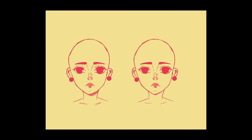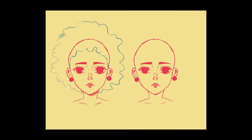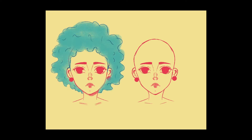I usually start by doing the hairline and sideburns. For this afro hairstyle, I'm just going to draw a bunch of squiggles, very randomly and very loosely, to get the basic structure of how an afro should look. This one is the easiest out of all of them. I darken the outline a little bit and give it some shading to add dimension, and then we move on to the next hairstyle.